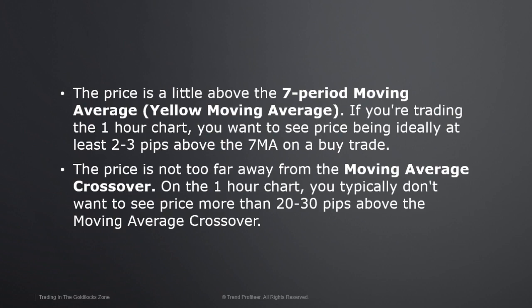For a buy or long trade, the price needs to be a little above the seven-period moving average — the fast moving average, or the yellow moving average as displayed in the Trend Profiteer system. If you're trading the one-hour chart, you want to see price being ideally at least two or three pips above the seven MA on a buy trade. The price also should not be too far away from the moving average crossover — on the one-hour chart, typically not more than 20 to 30 pips above the crossover.